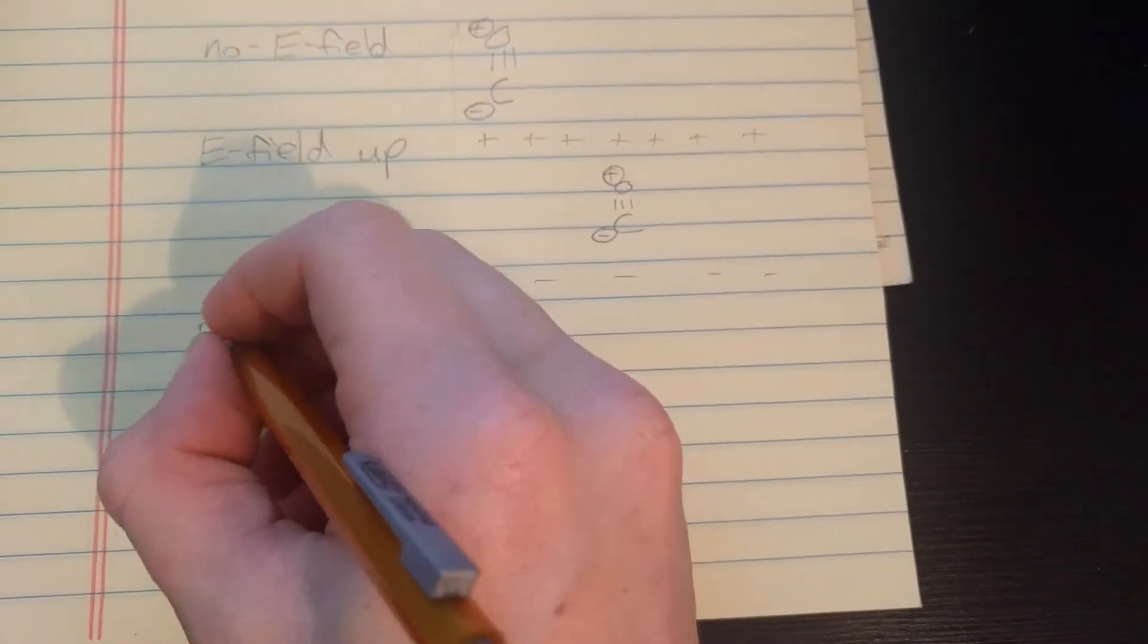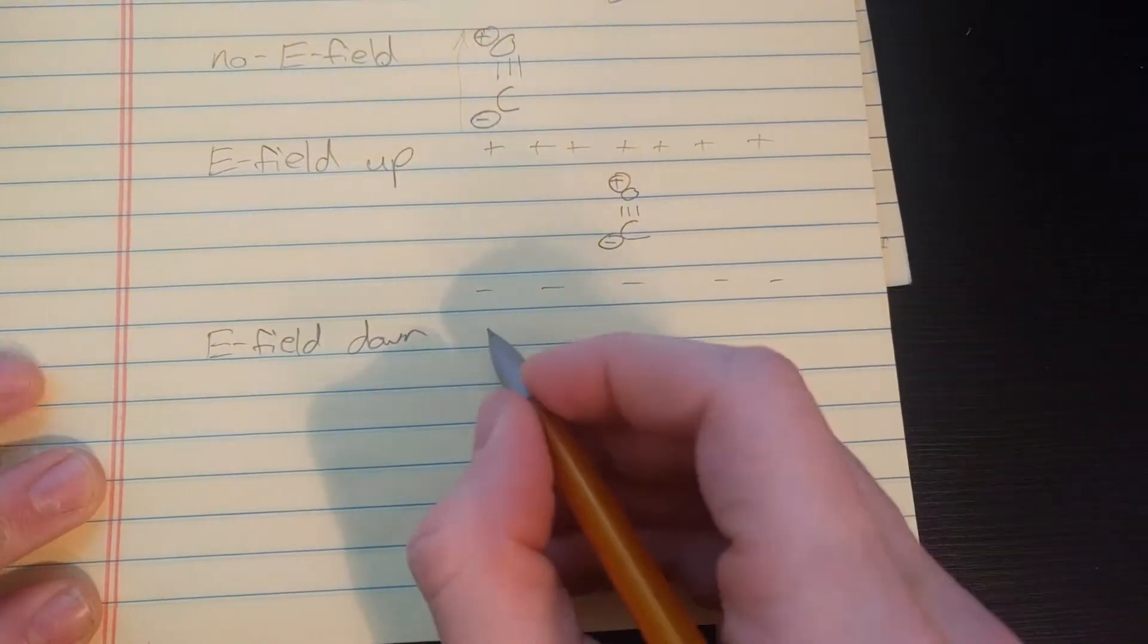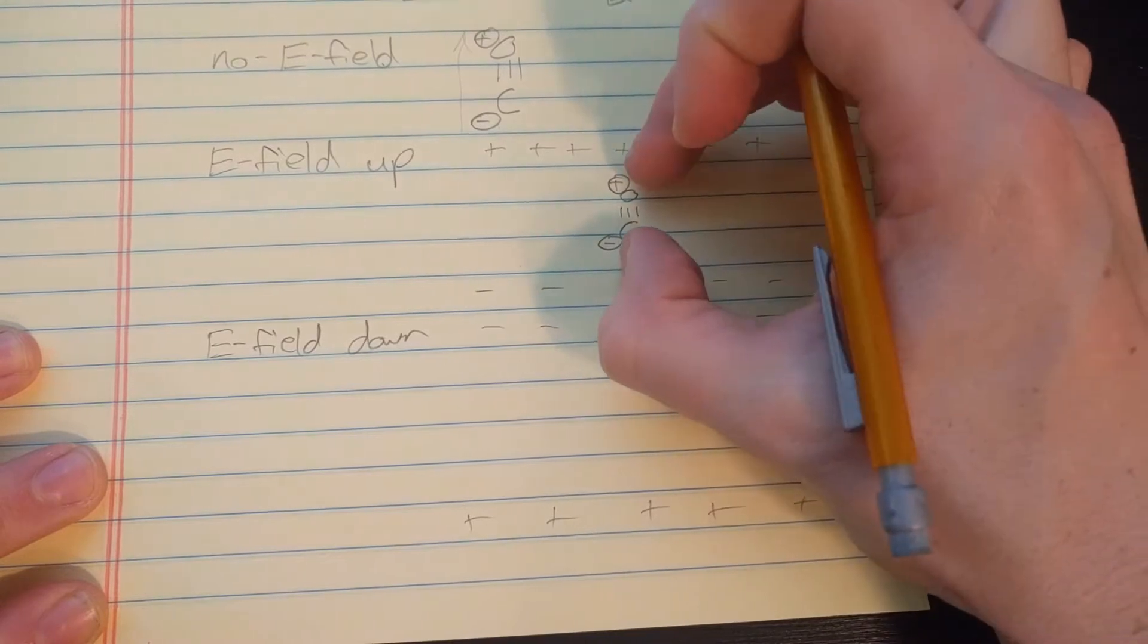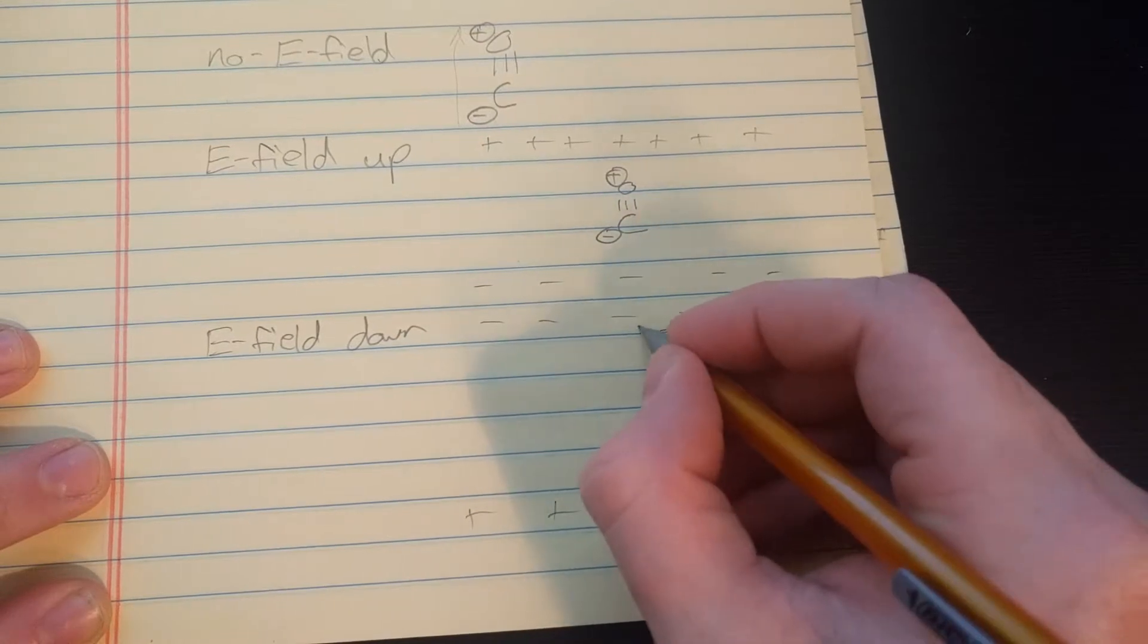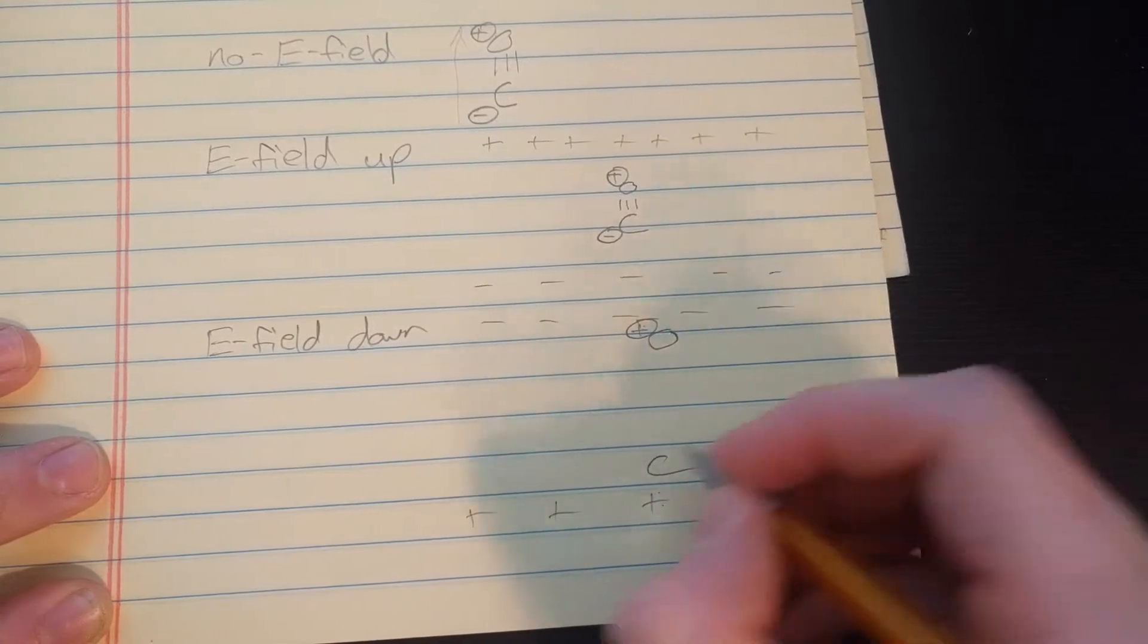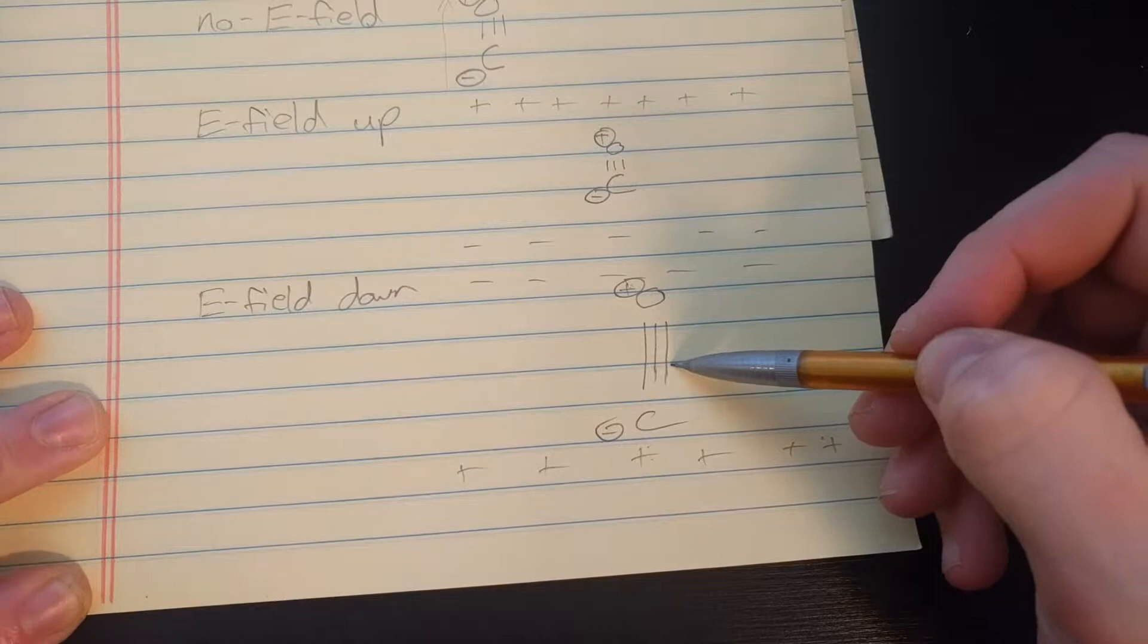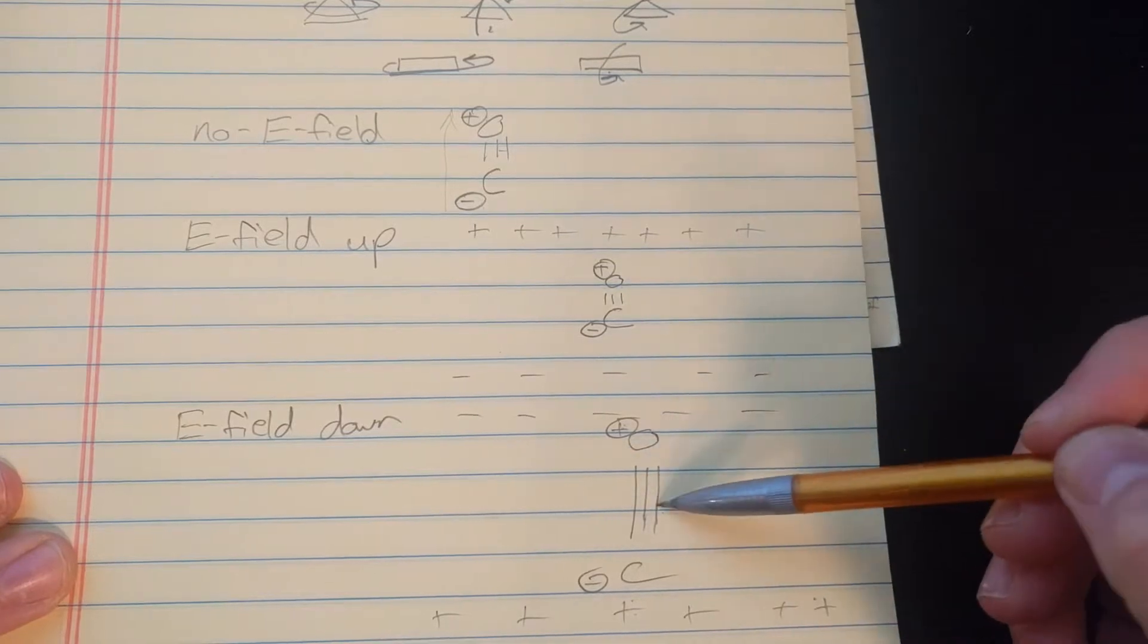Now, let's point the electric field down. So, that would be like you have a bunch of minus charges up there, a bunch of plus charges down here. And if the molecule's facing the same way, well, the positive charge is going to be attracted to these negative charges, so the oxygen's going to lie up there. Carbon has a negative charge. It's going to be attracted to this positive charge. So, it's going to lie down here. Now, I'm very exaggerating this. But the bond's going to be longer. So, you see, no E field, it's like this. E field going up, it's short. E field going down, it's long.